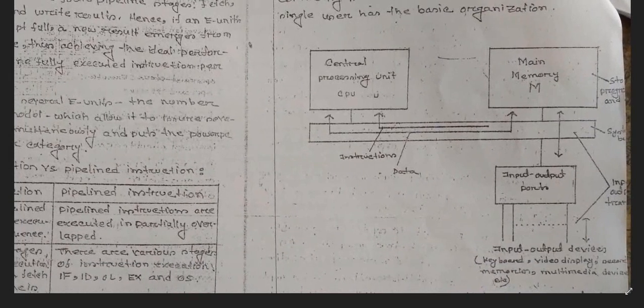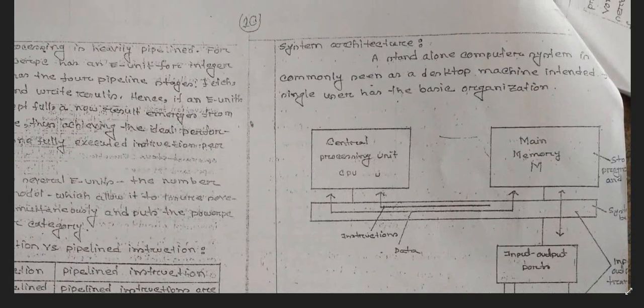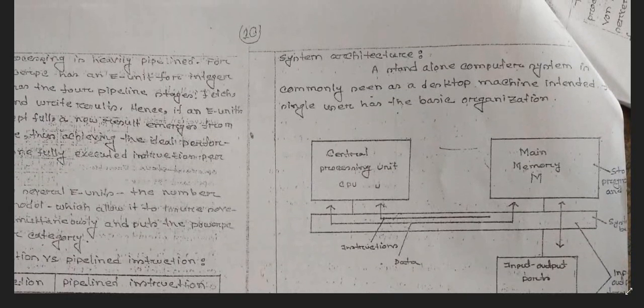This is the diagram of system architecture. We have the main memory, then the input/output ports connected with a bus. This bus is connected with the main memory, and the main memory is connected with the central processing unit via a system bus. This is the system architecture.